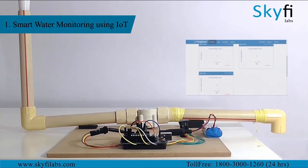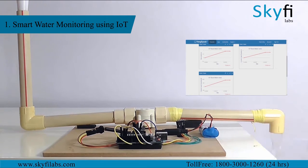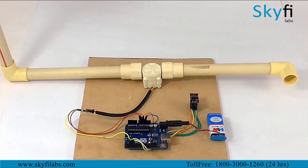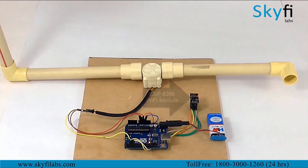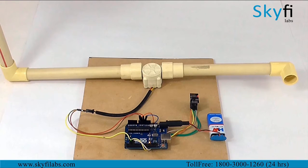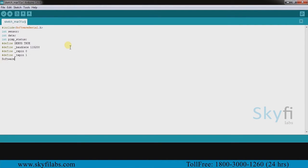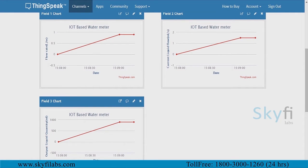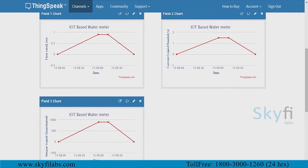You will begin this course by building an IoT based smart water monitoring system that collects data about how much water is being consumed and sends it to the cloud for storage and analysis. You will use a water flow meter to collect data on water flowing through a pipe, and an ESP8266 WiFi module to send data to the cloud. You will also use an Arduino board and program it to coordinate between the flow meter and ESP8266. You will then use the ThingSpeak IoT analytics platform to analyze the data and show results in visual format.